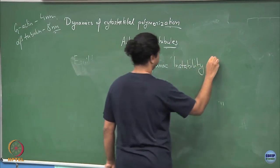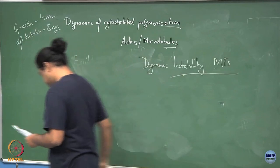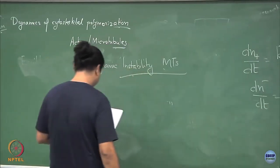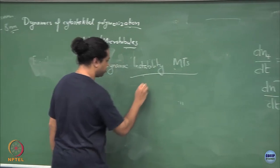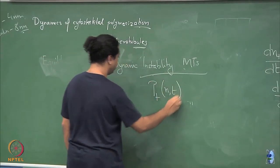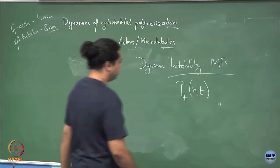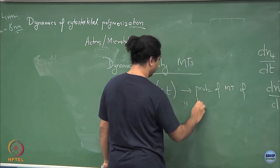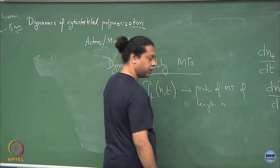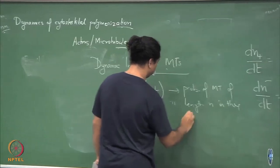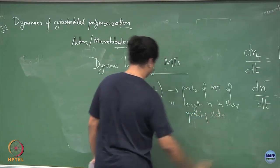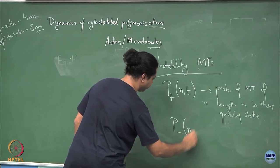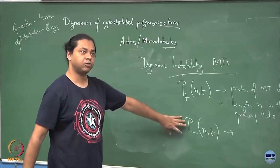So that you ultimately approach the biological situation of dynamic instability of microtubules. Let me say that my microtubules have a probability distribution P-plus of n comma t. This is the probability of a microtubule of length n in the growing state. And similarly, you can write P-minus of n, t, which is the probability of a microtubule in the shrinking state.